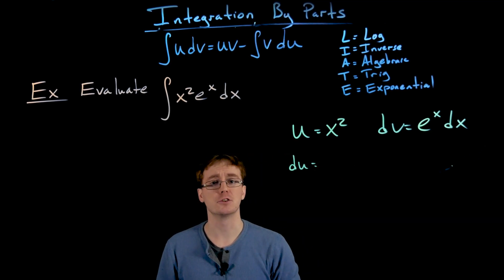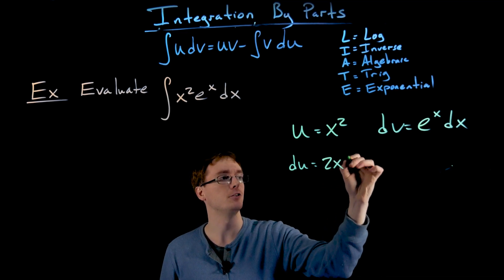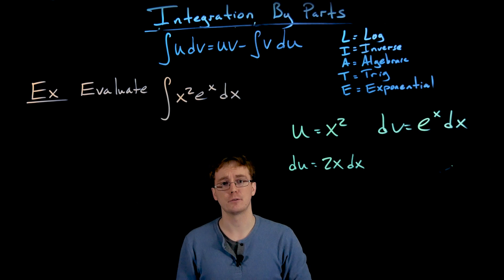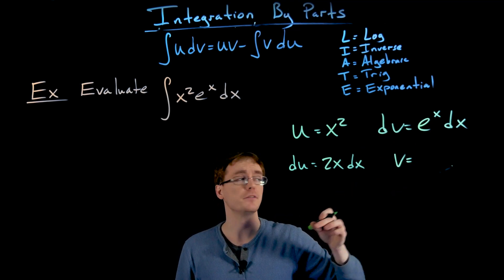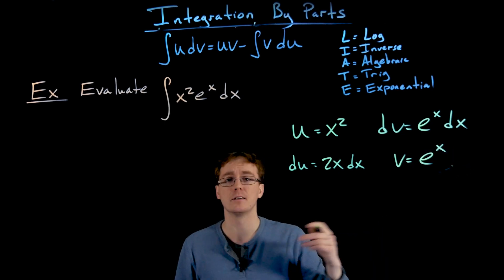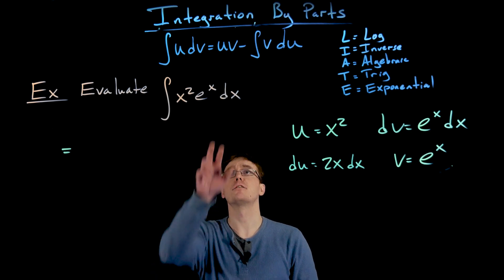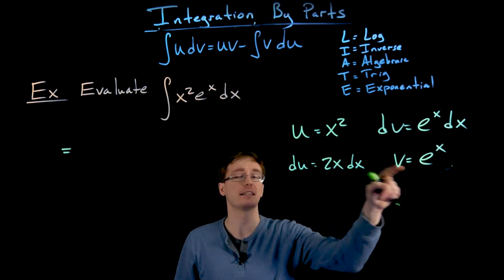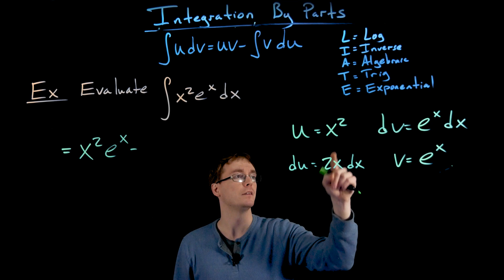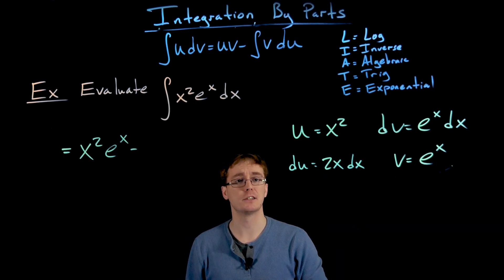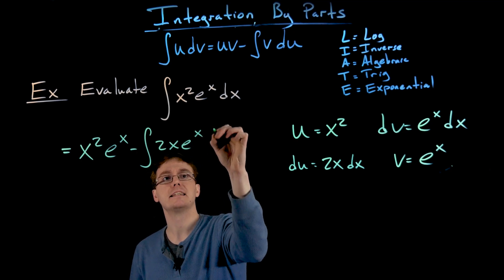Finding the other pieces: the derivative of x squared gives du equals 2x dx, and the antiderivative of e to the x is e to the x, so v equals e to the x. Plugging into the integration by parts formula, we get x squared times e to the x minus the integral of e to the x times 2x dx, which we can rewrite as minus 2 times the integral of x times e to the x dx.